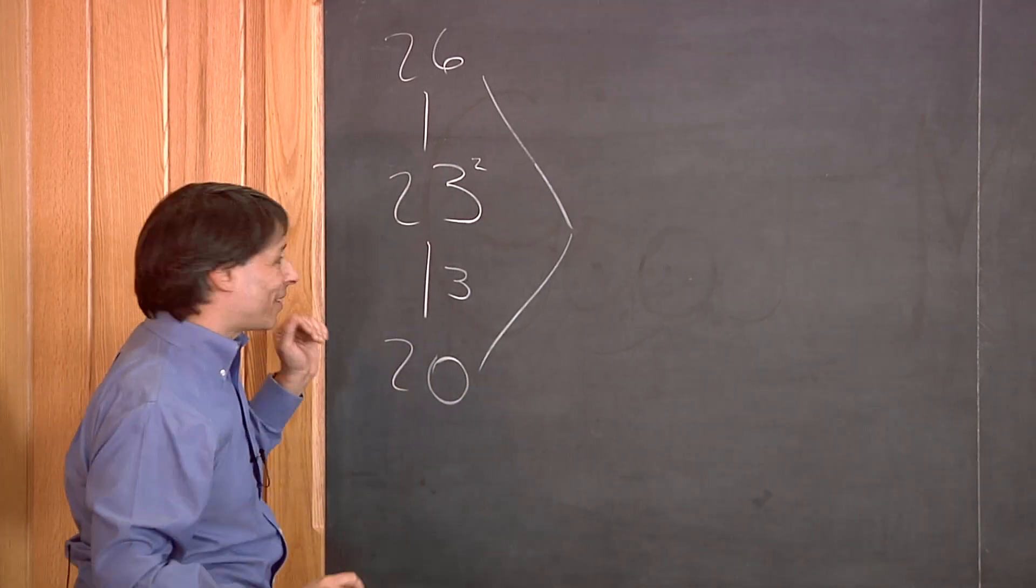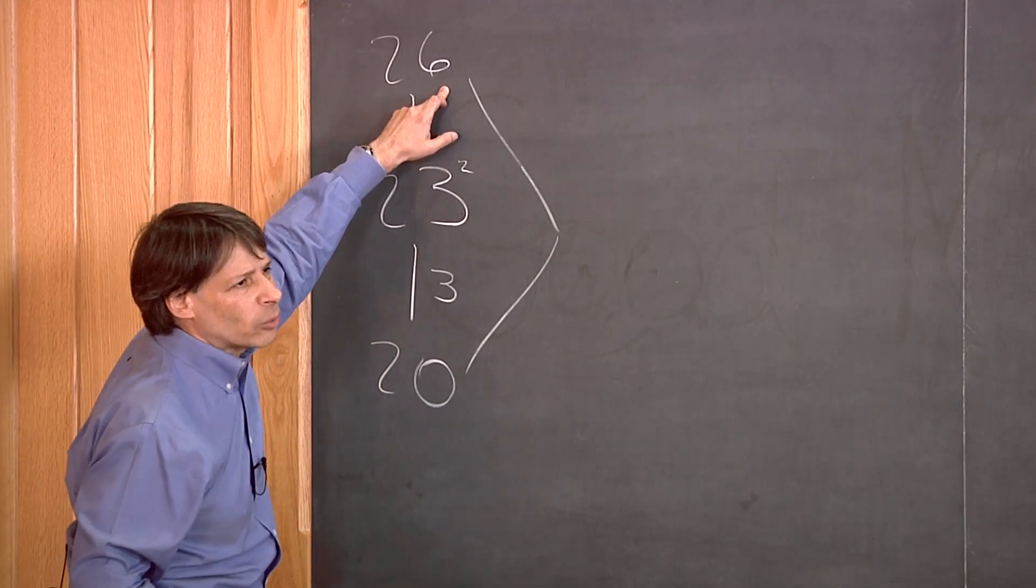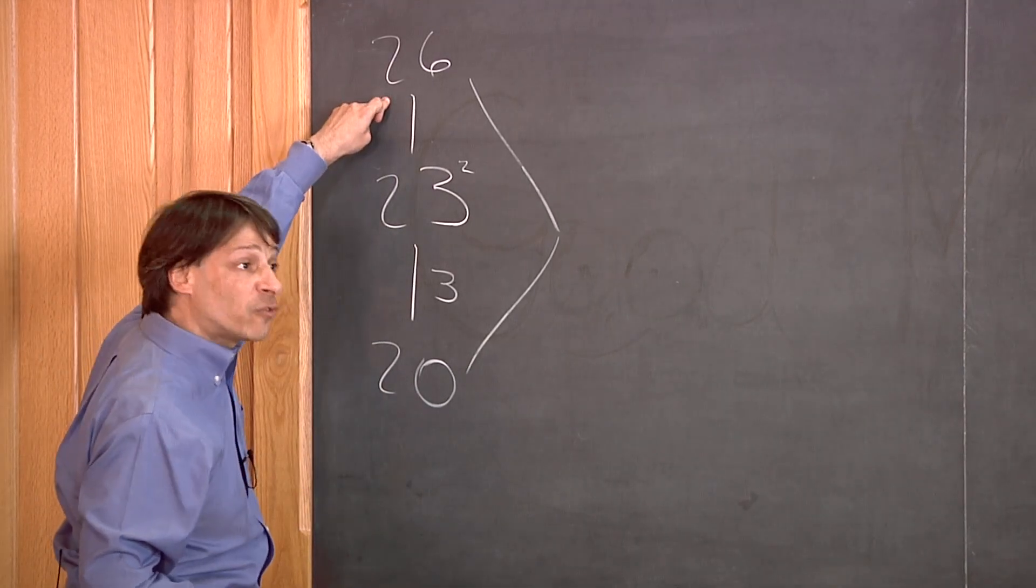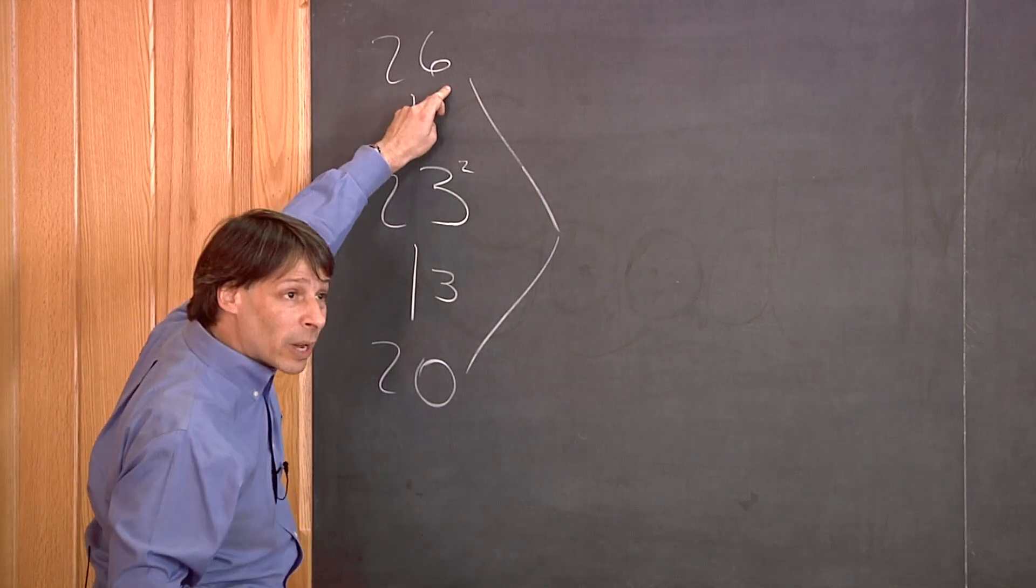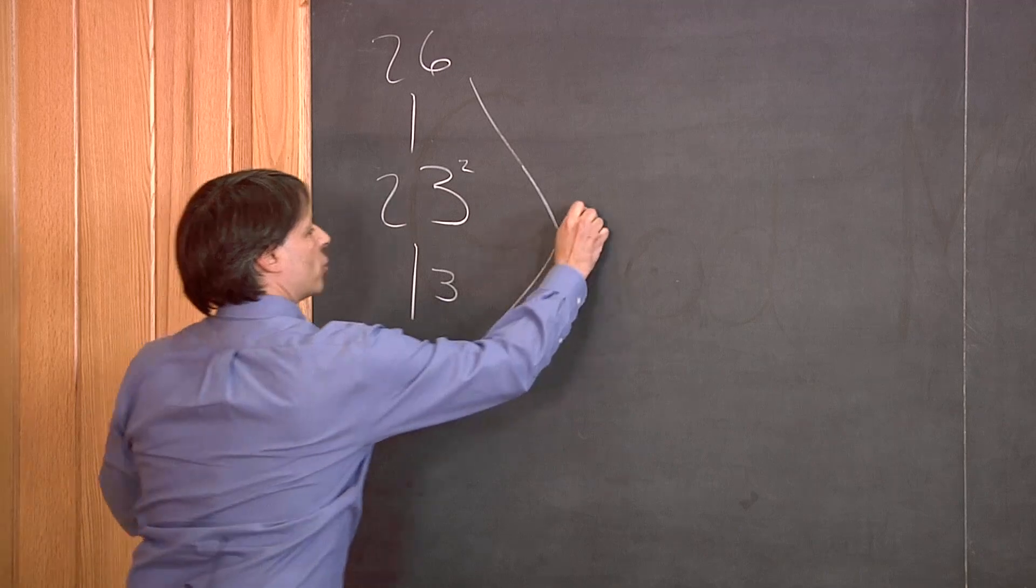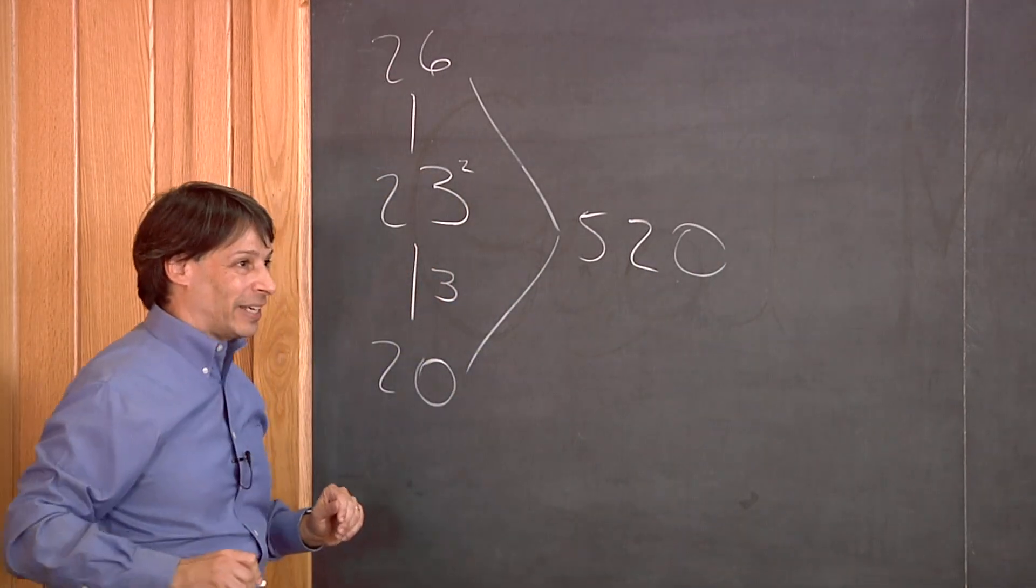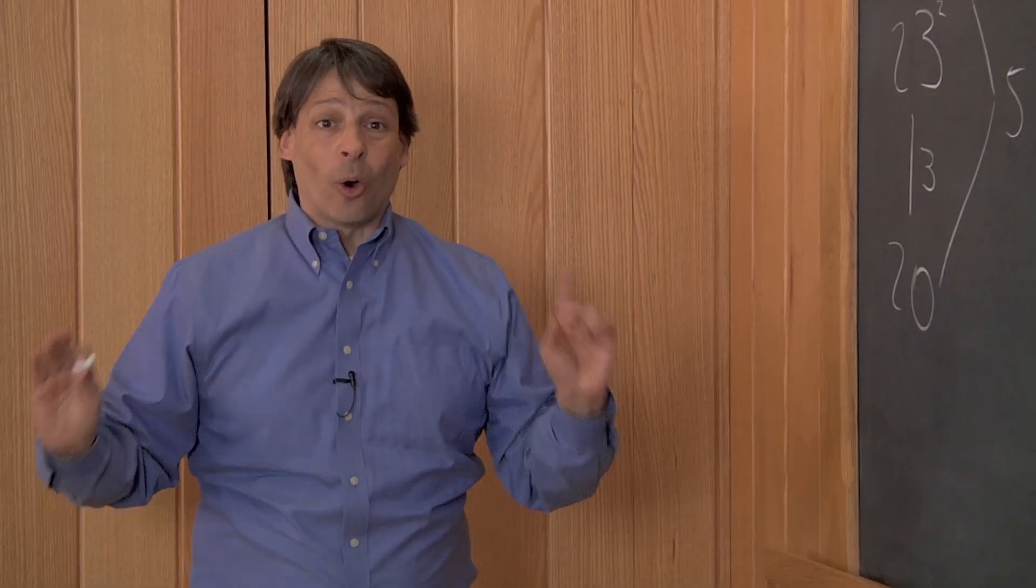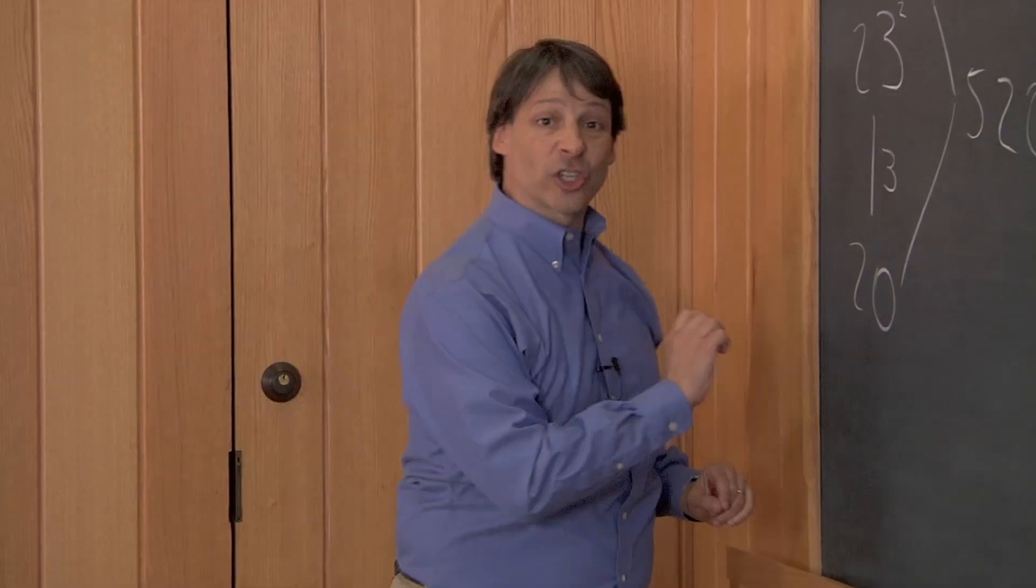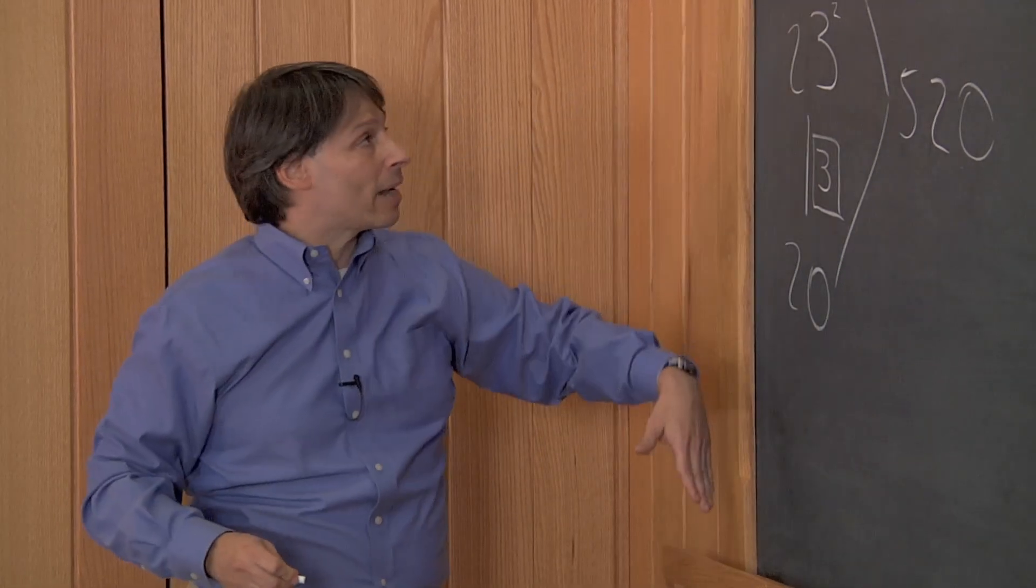Let's do that one in our heads. If I do 2 times 26, we do it left to right. 2 times 20 is 40. 2 times 6 is 12. 40 plus 12 from left to right is 52. So 20 times 26 is 520. Almost done. All we have to add to this is the square of the number that we went up and down.